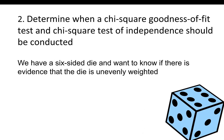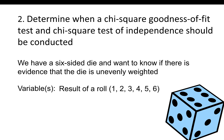Here's another example. We have a six-sided die and want to know if there is evidence that it is unevenly weighted — in other words, whether the proportions of rolls that are a one, two, three, four, five, and six are not all equal. The variable is the result of the roll. Because there is one categorical variable with six levels, we should conduct a chi-square goodness of fit test.